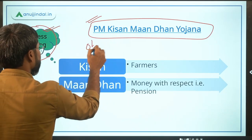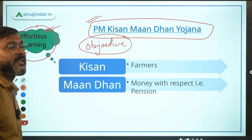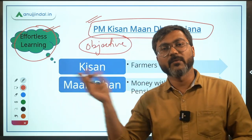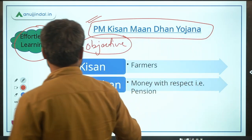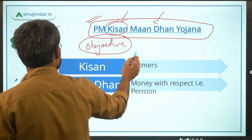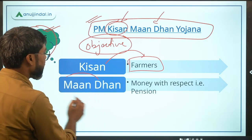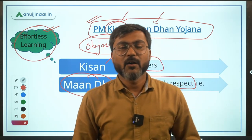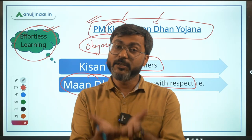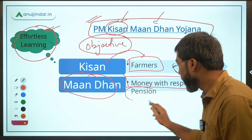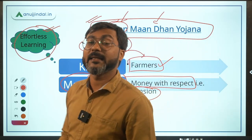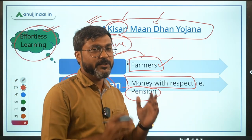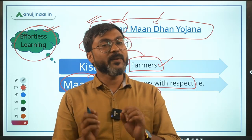Let's start with the objective of the scheme. The objective can be drawn from the name itself — PM Kisan Mandan Yojana. Kisan means farmers, and Mandan relates to respect and money — which we get when we retire, after 60. That money is called pension. So the government is providing pension to the farmers through this scheme. It is a pension benefit scheme for the farmers.